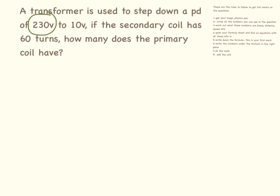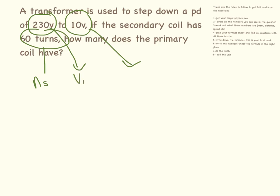Here again it's a wordy one. The secondary coil has 60 turns, so that makes that Ns. It's a step-down transformer with a potential difference of 230 to 10. So 230 is Vp and 10 is Vs. Our equation is Vp divided by Vs equals Np over Ns. It may seem really tedious writing this equation out over and over again, but if you get used to writing it out in practice questions it will come naturally in the exam, and it is one of the things that examiners like to see.